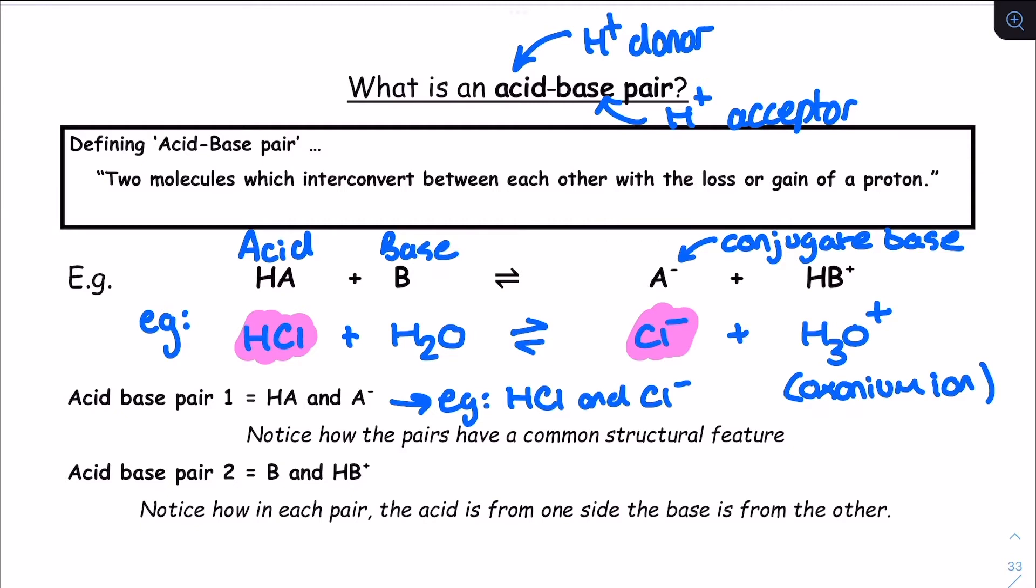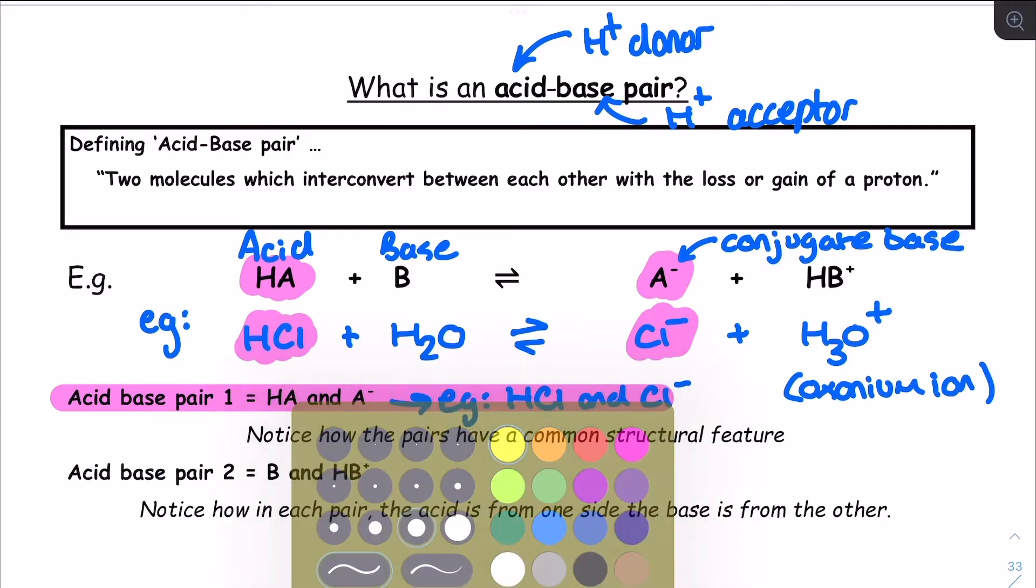Similarly, the H2O and the H3O+ are another acid-base pair. The H3O+, in the reverse direction, donates its proton to the Cl- to form the H2O and the HCl, respectively.